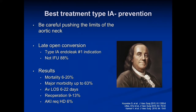Here's Ben Franklin — an ounce of prevention is worth a pound of cure. I'm very heartened to hear everybody talk about staying within the IFU and not pushing the boundaries of the aortic neck; it is very unforgiving. Type 1 endoleak is the number one reason for late open conversion, and it's been found that most of these patients did not follow the IFU. Mortality ranges from 6% to 20% for open conversion, averaging around 10%, with a lot of morbidity, long hospital stays, acute kidney injury, and the need for reoperation.